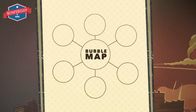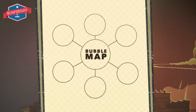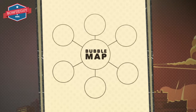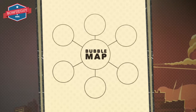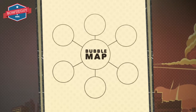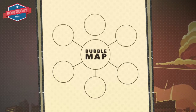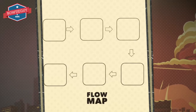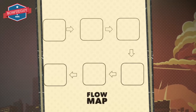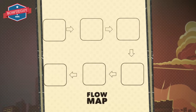Utilizing a bubble map is an awesome idea if you want to describe a topic. In the outside bubbles you would list as many adjectives as you can to describe that central topic. A flow map is used to illustrate the thinking of someone who wants to demonstrate sequencing in an event.